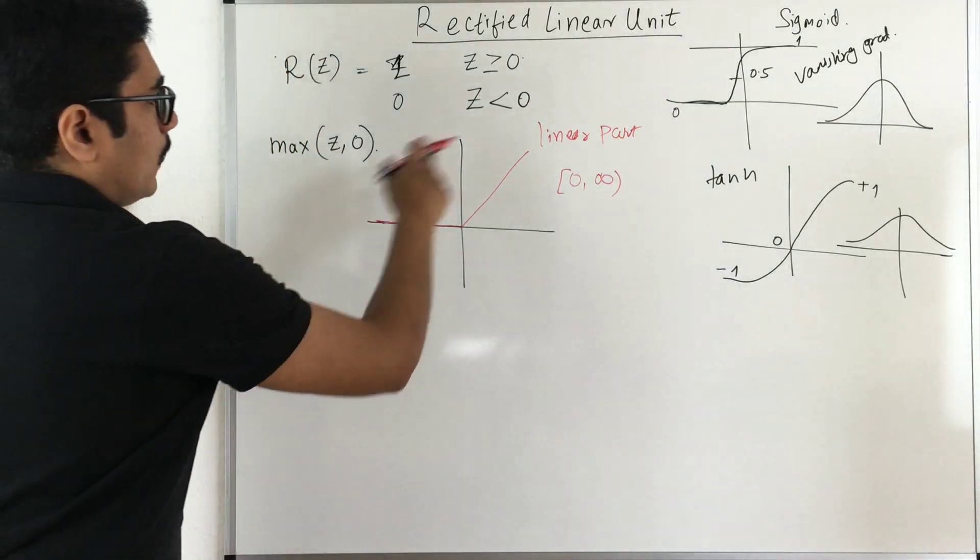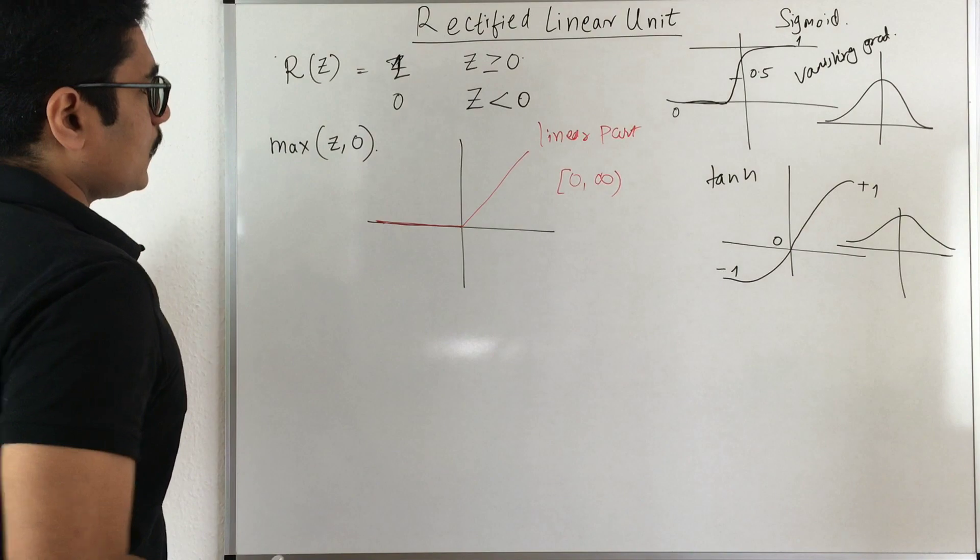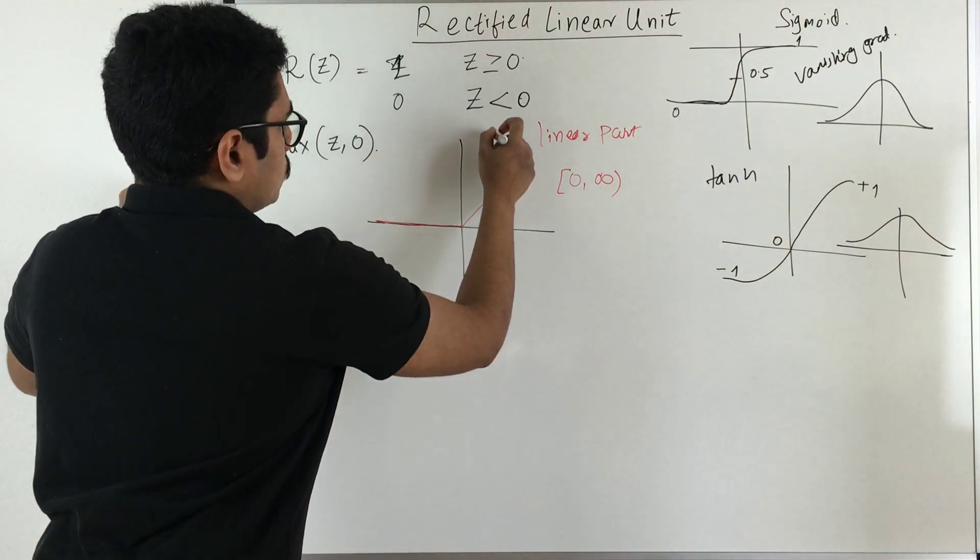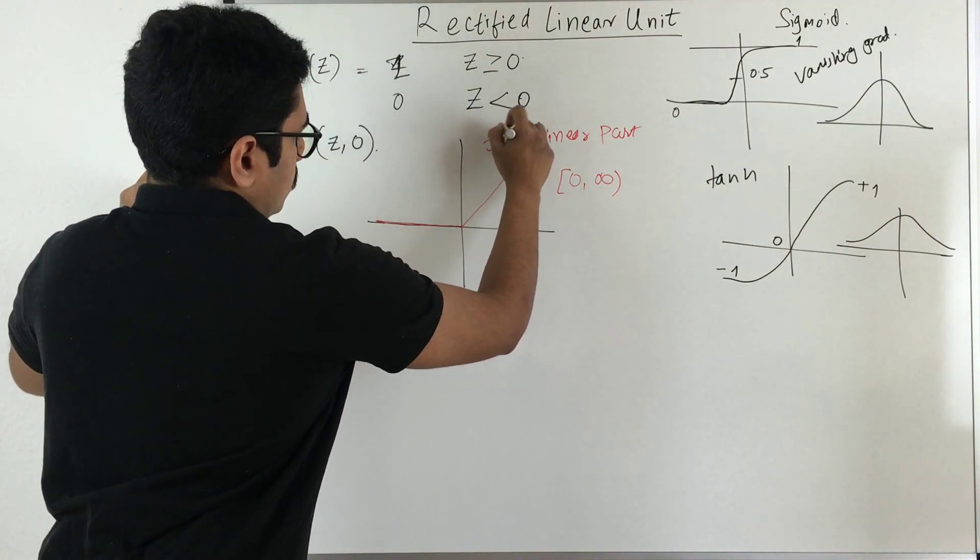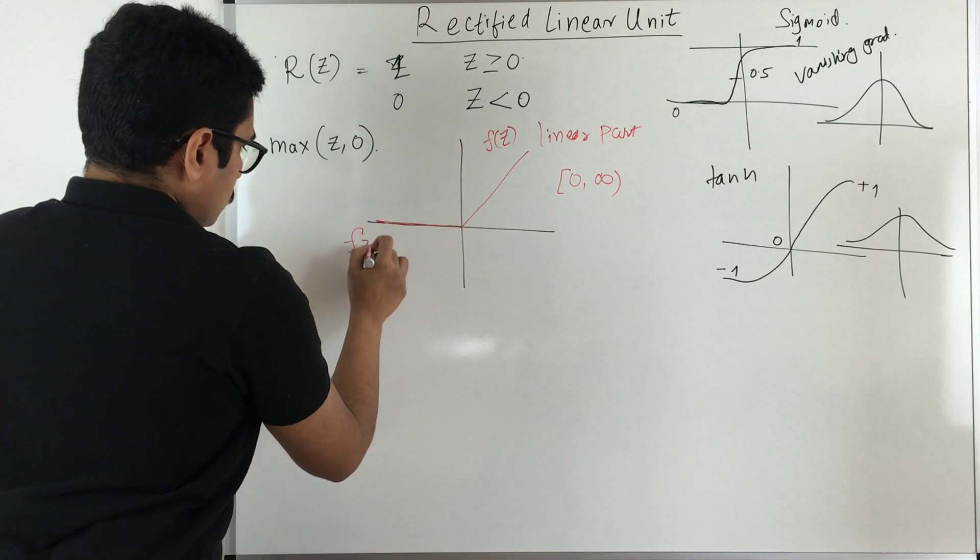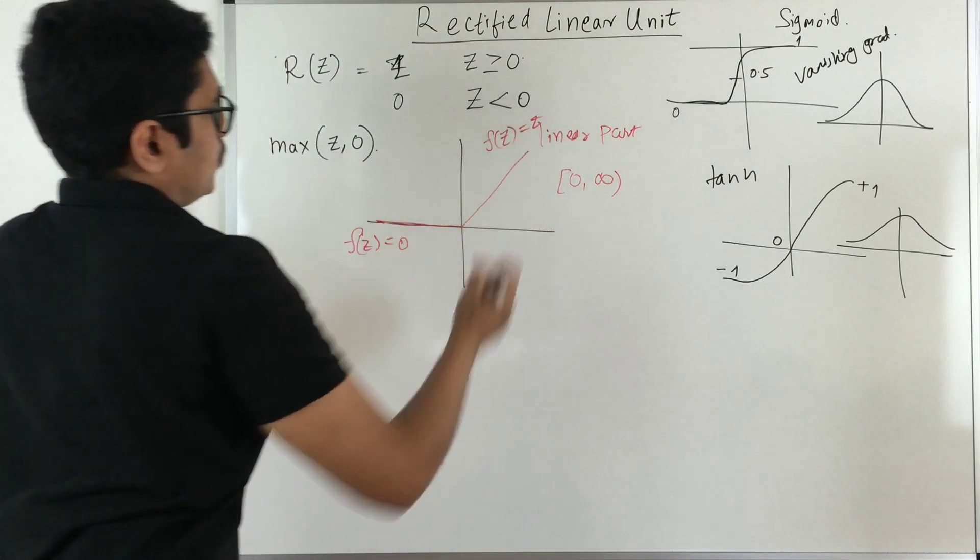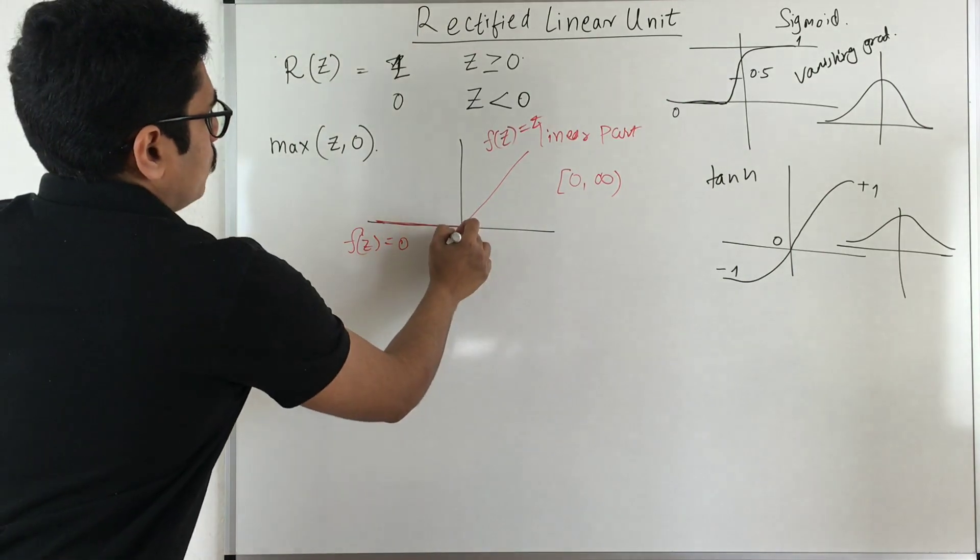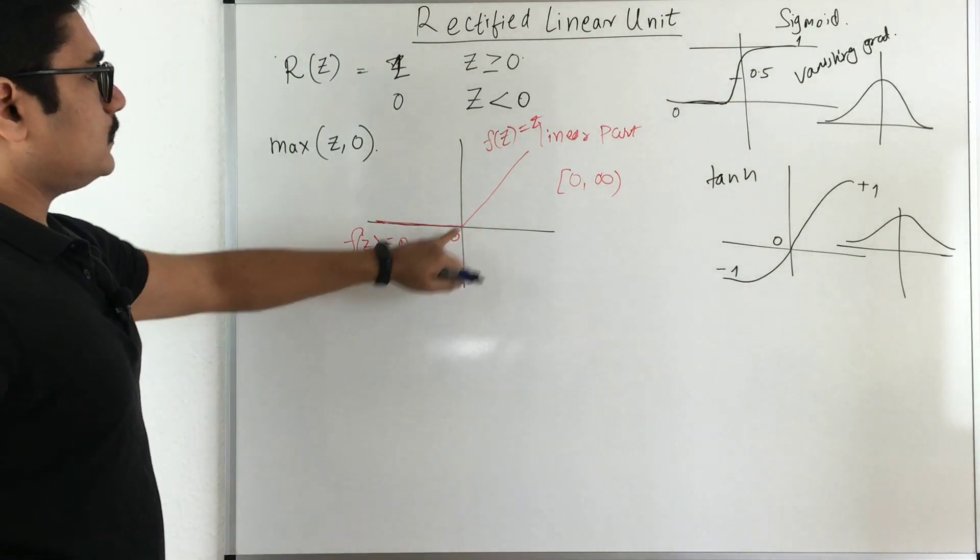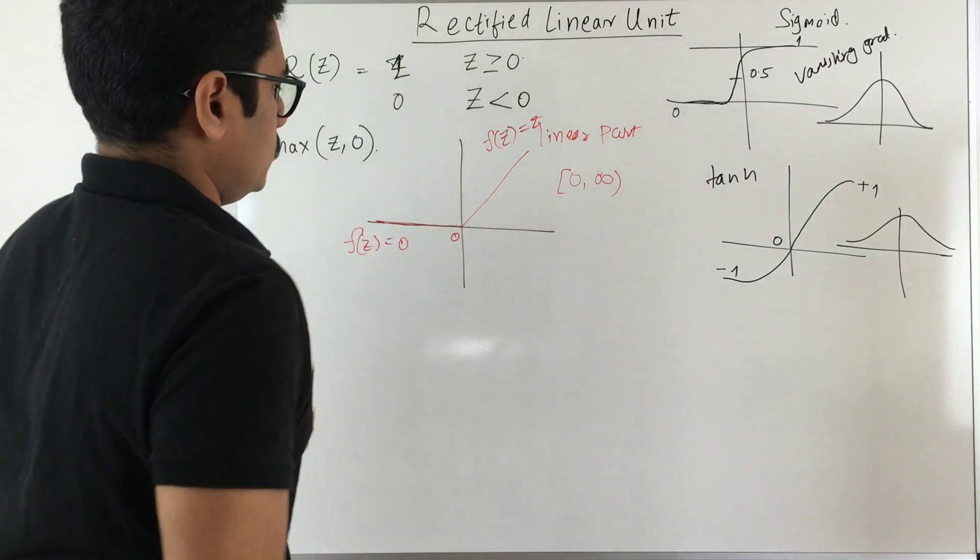So where your range for this particular is from 0 to infinity. So 0 is bounded and infinity is unbounded. So you have this ReLU function something like this. So this is f of z and f of z is equal to 0, and this is equal to z. And you have your 0 so this is centered at 0 and you have a function something like this.